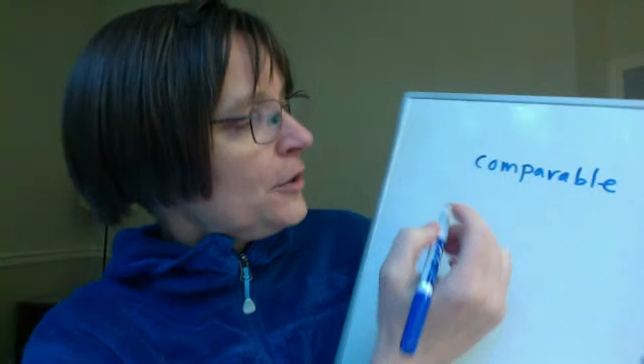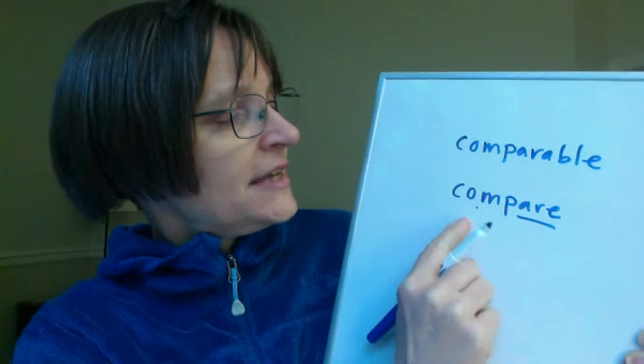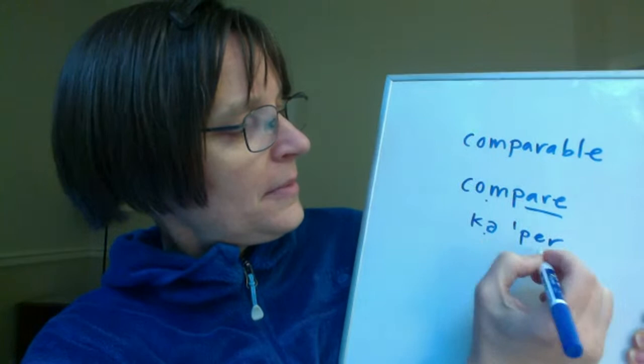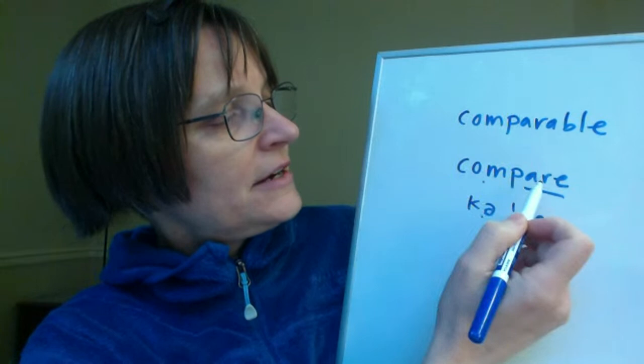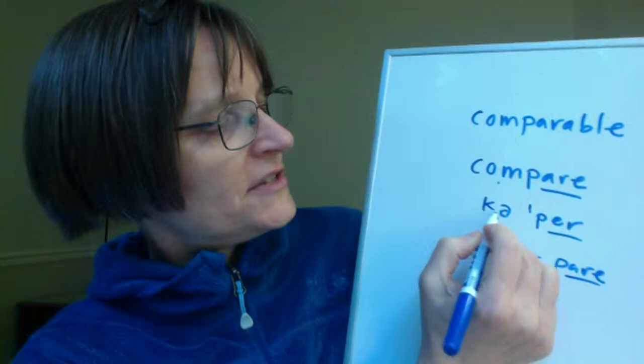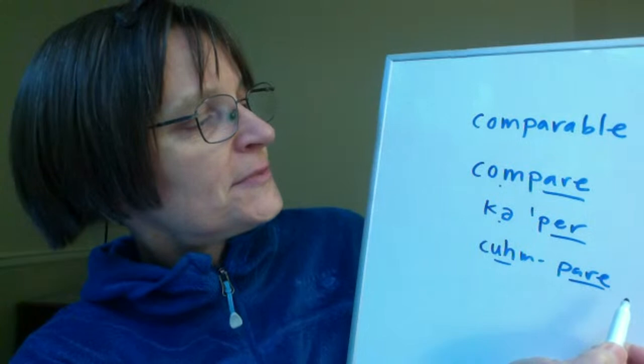Let's look at the word 'compare.' In the word 'compare' we have a short unstressed syllable and the second syllable 'pair' is stressed. I have that clear A vowel, and a schwa — so in IPA it would look like an upside-down E that sounds like 'uh.' The letters don't necessarily match; we might think of it as an 'uh' sound: 'compare.' When we look at 'comparable,' our stress pattern changes.